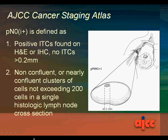This is an image from the AJCC Cancer Staging Atlas showing the pathologic N0(i+), with its definition of cells greater than 0.2 mm and non-confluent or nearly confluent clusters of cells not exceeding 200 cells in a single histologic lymph node cross-section.